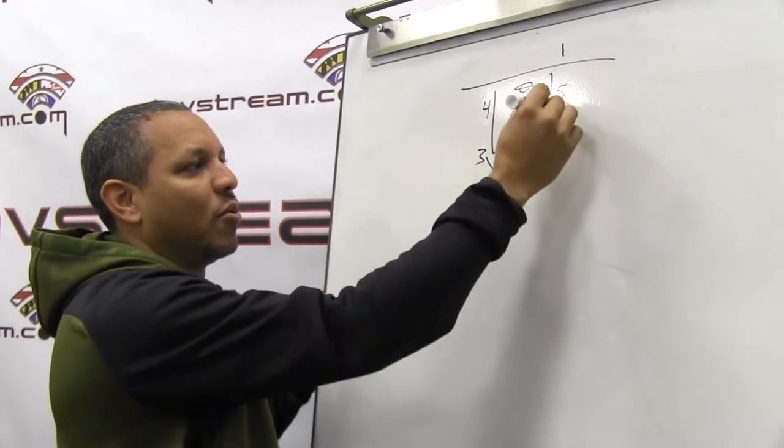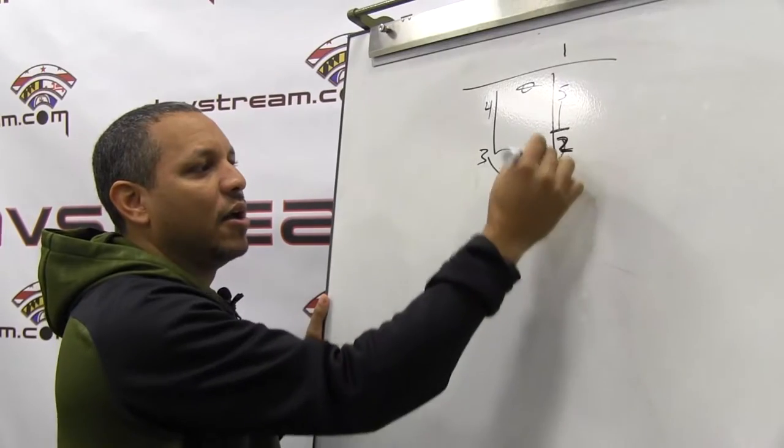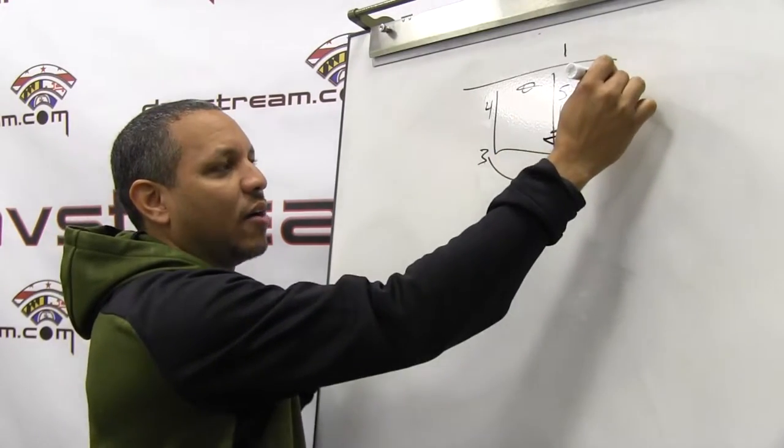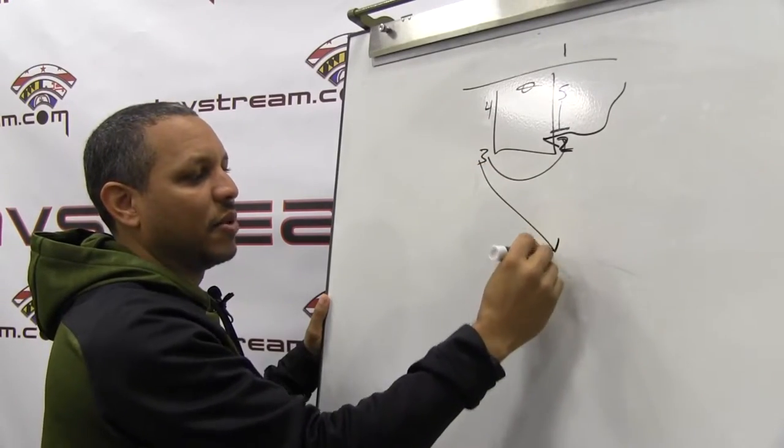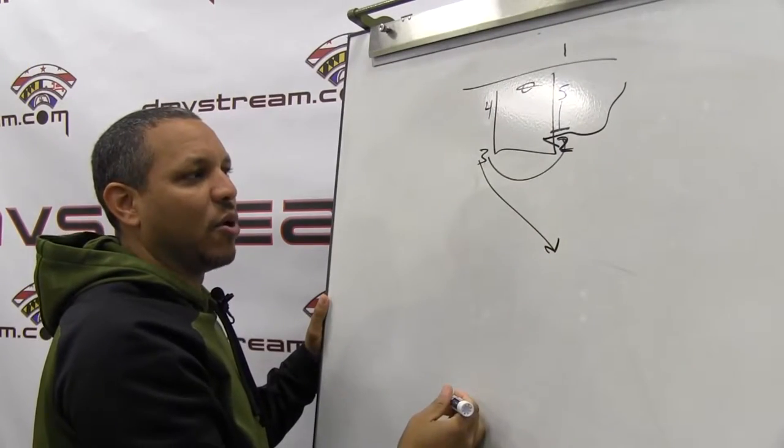So when we slap the ball, we want our five man to come up, hit hard. Our two, he's going to come right out here. It's going to draw the attention because he's a good shooter. My three is going to come. He's going to be my outlet in case we need to get the ball in.